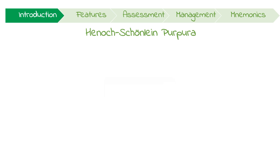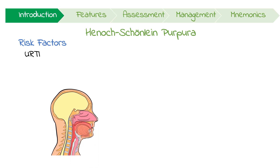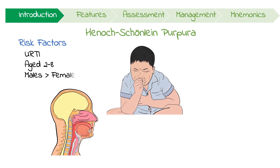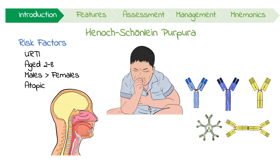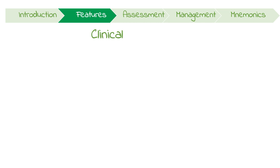Let's focus on some of its risk factors first. A recent upper respiratory tract infection is typical in about 50% of patients. It most commonly affects children between 2 to 8 years old. Males are slightly more affected than females by a ratio of up to 2 to 1. Finally, a history of atopic conditions and allergies are also thought to be a risk factor.